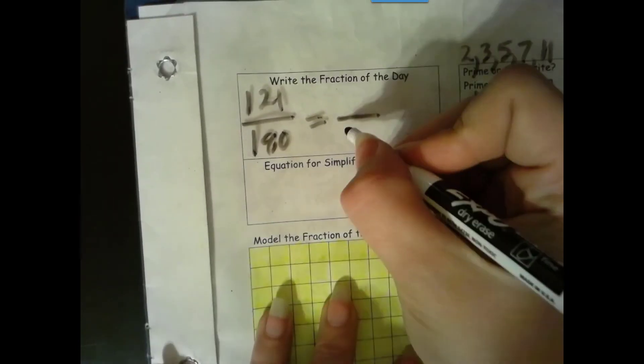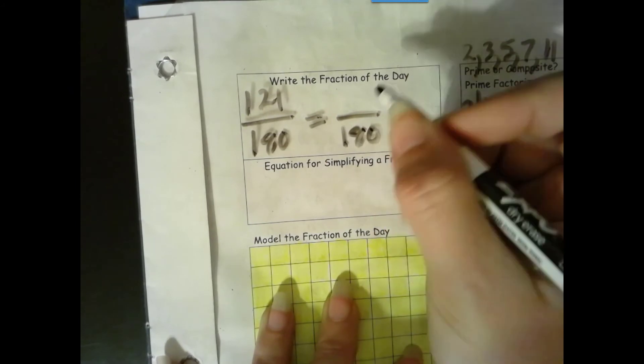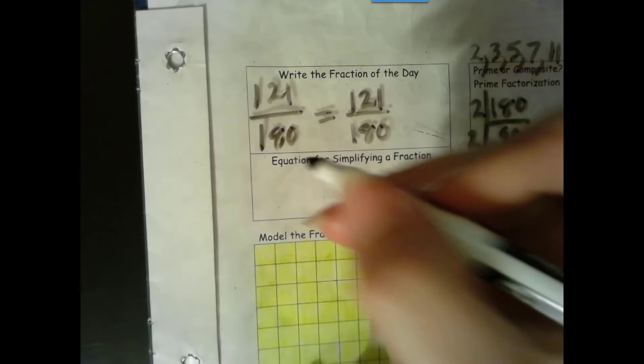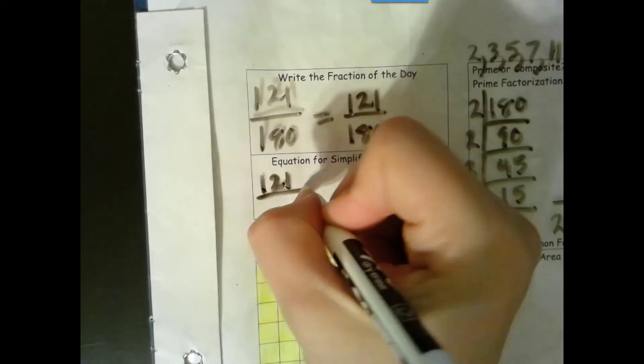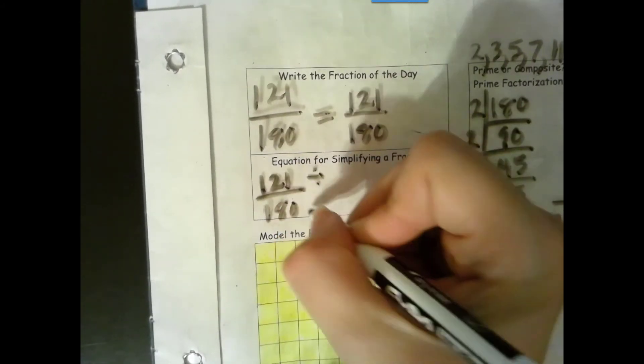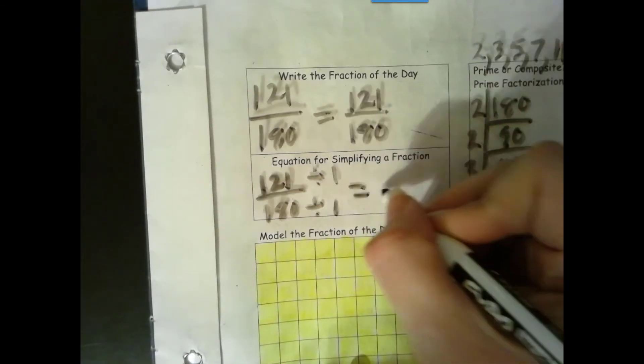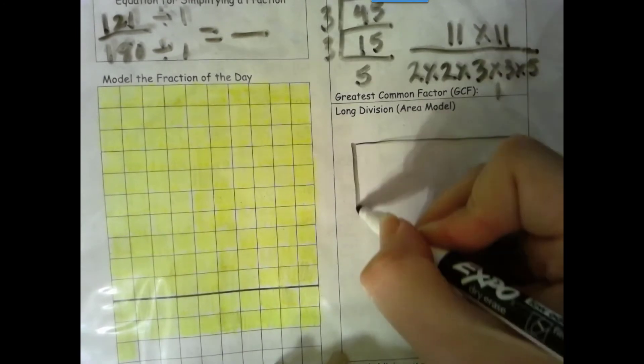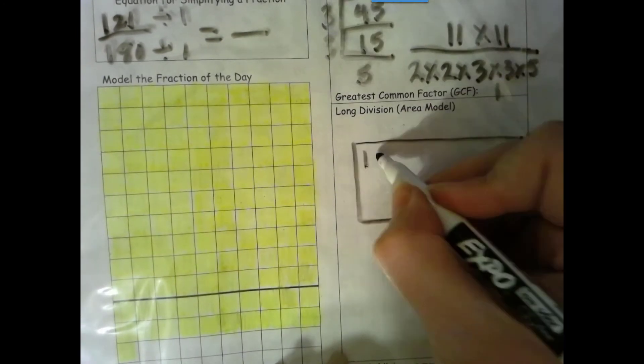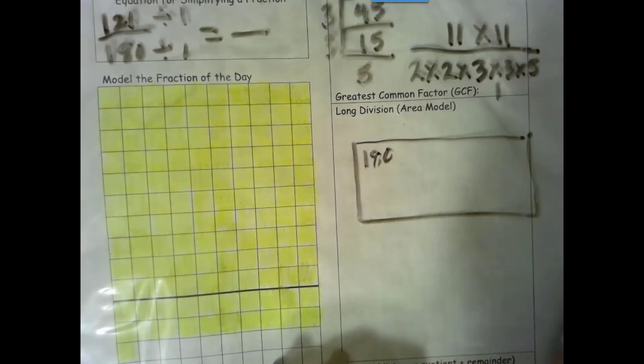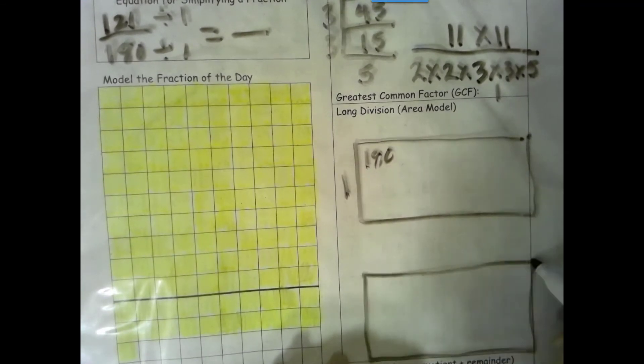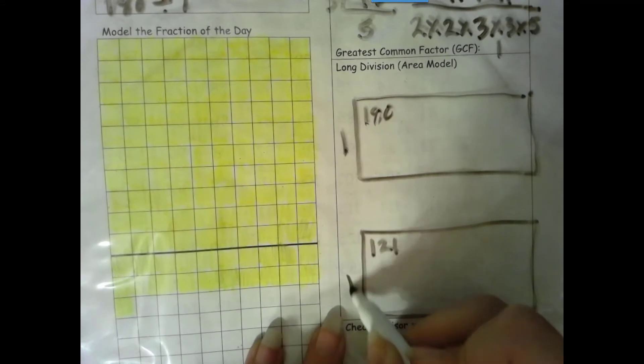We have a total of 180 groups, and there are 121 groups of 1 shaded in. Let's go ahead and prove it with our algorithm. We have a rectangle here, our area model. 180 square units. This side is 1. This one has an area of 121. This side is 1.